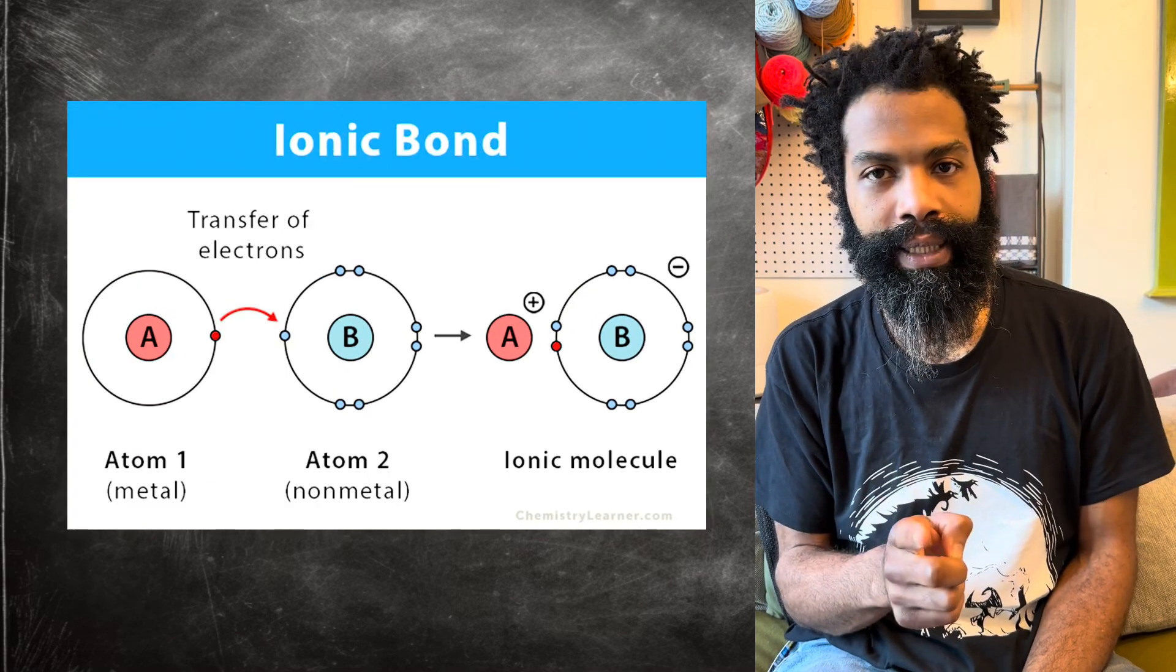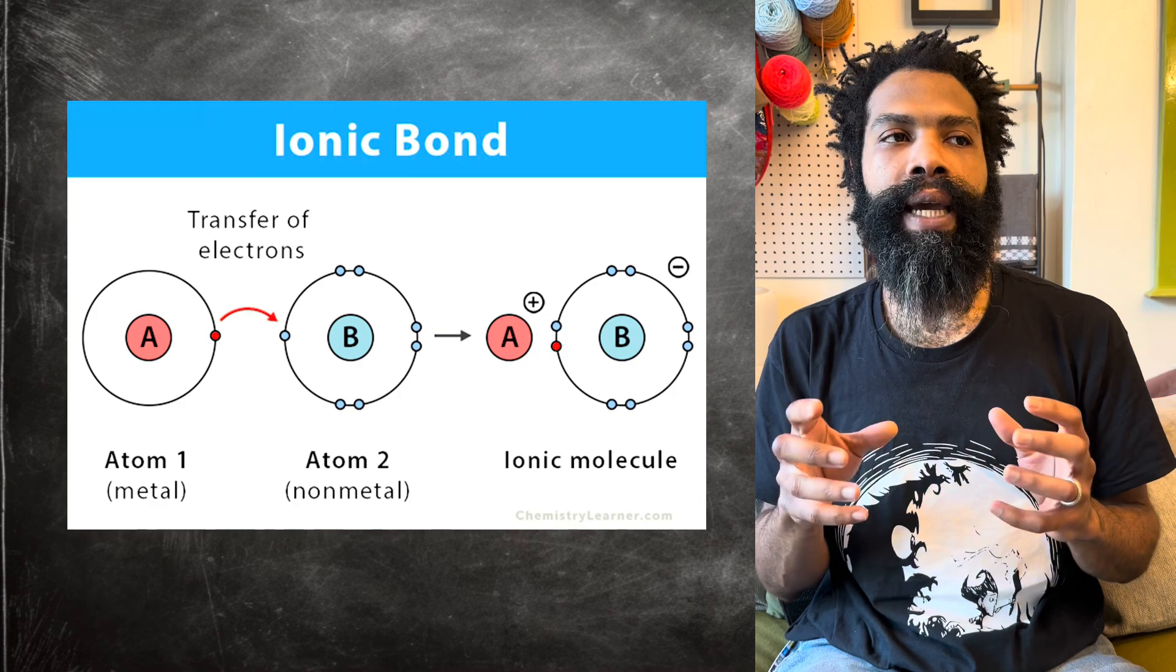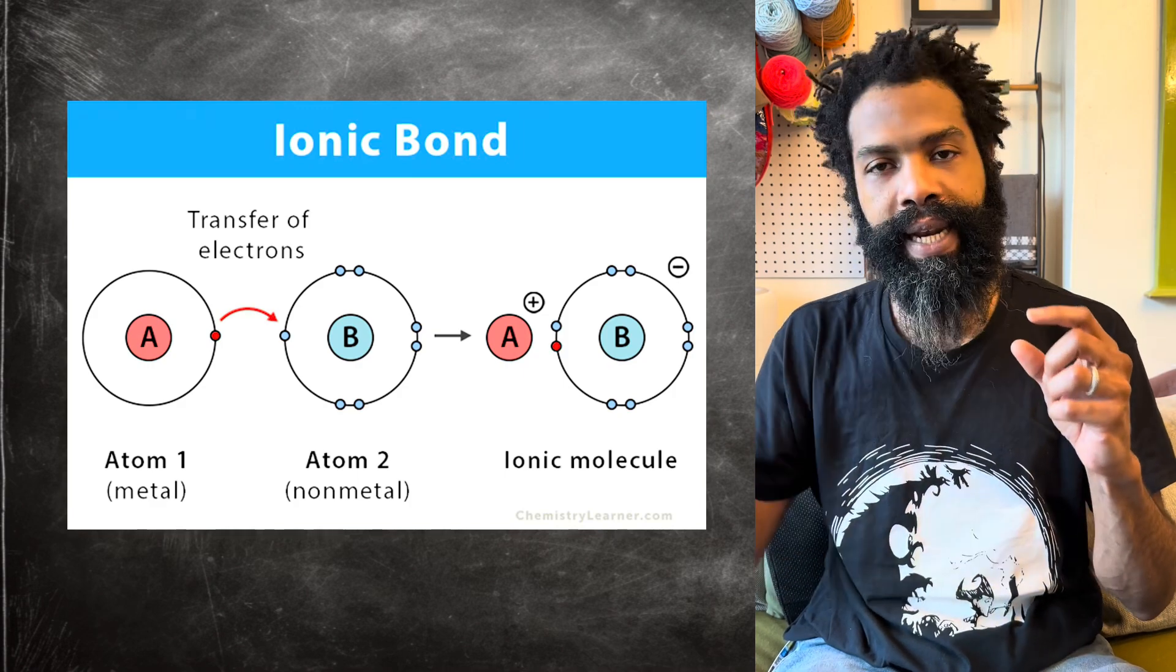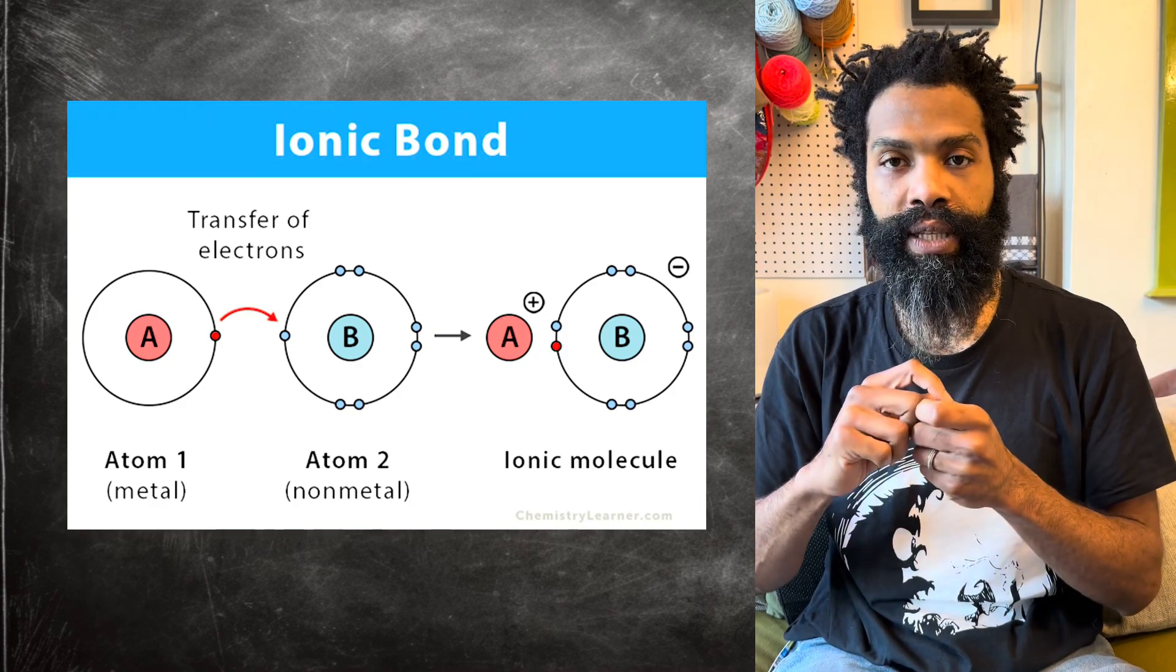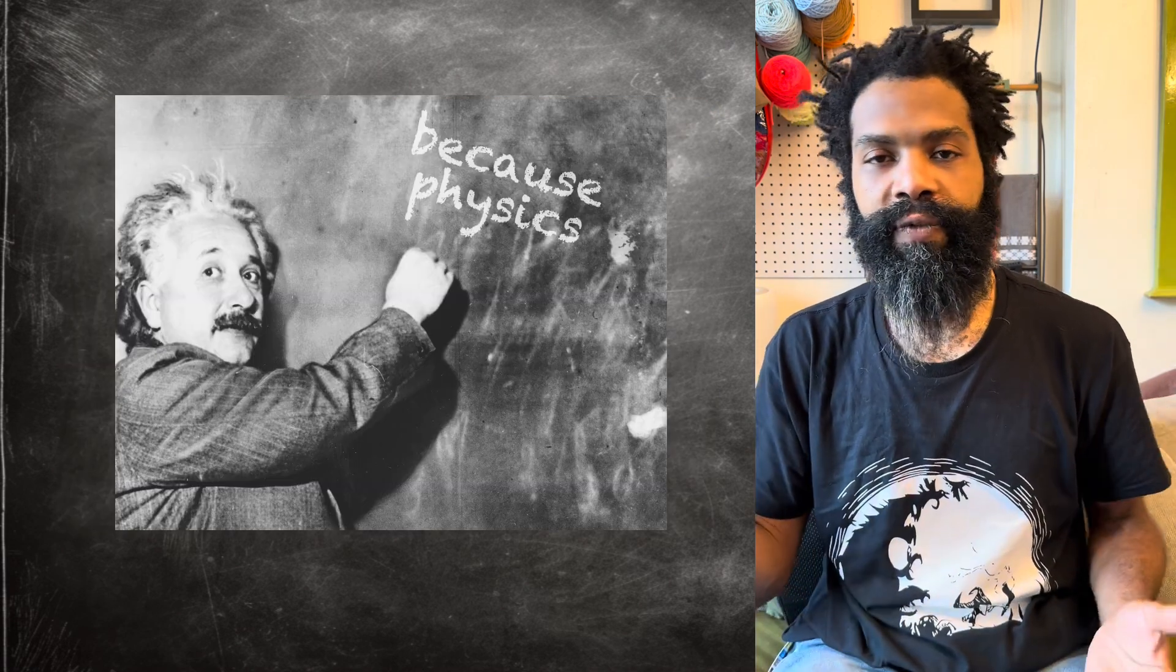Ionic bonds don't work like this. Ionic bonds are more like when you have the positive and negative terminals of a magnet and they want to stick to each other because opposite charges attract.